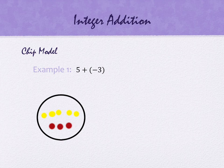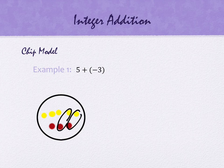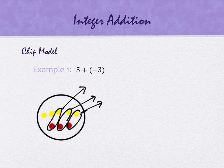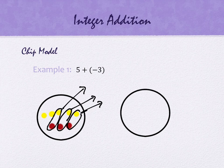A zero pair cancels each other out — we saw this in proportional statistical reasoning as well. So we're pairing these up because a zero pair cancels each other out. As we pair them up, we should only have one color of chip left. In this case, there are two that are yellow, and that gives us the number 2.